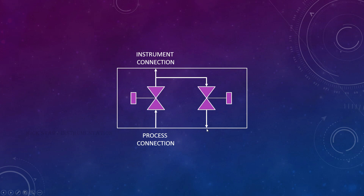Connection 3 is the drain connection. To drain the process medium, we have a valve and using this valve we will drain. When we connect the process connection to the main pipeline — which may carry water, oil, etc. — and if the isolation valve is open, it will be filled with the process medium.